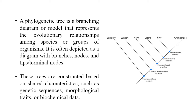The data used to construct a phylogenetic tree is based on phenotypic characteristics, or by DNA similarities and dissimilarities, or by protein similarities and dissimilarities, or by biochemical similarities and dissimilarities.